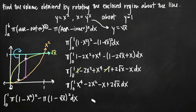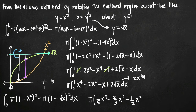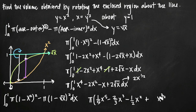Taking the antiderivative: one fifth x to the fifth minus two thirds x cubed minus one half x squared. For 2 times x to the one half, adding 1 to the exponent gives three halves, and dividing 2 by three halves (multiply by two thirds) gives four thirds x to the three halves. We evaluate this on the range 0 to 1.